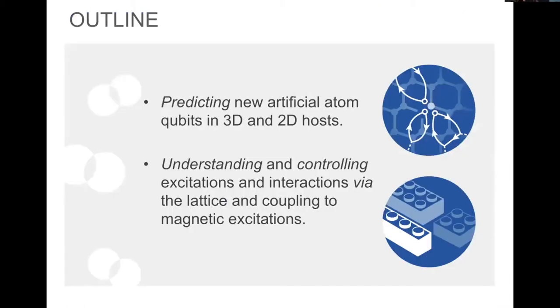So I'll tell you about two primary topics today, how we predict these new artificial atom qubits, both in 3D and 2D host lattices. Going from there, I'll tell you about how we control these systems, so the various excitations that are possible, whether they're purely optical, optomechanical, whether we use magnon-mediated schemes, and where the lattice can either harm or help you in using these artificial atom qubits.